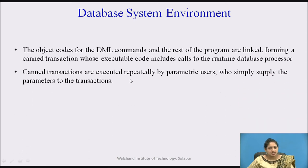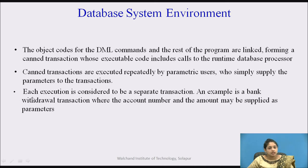Canned transactions are executed repeatedly by parametric users who simply supply the parameters. For example, bank clerks perform repetitive functions like withdrawals and deposits. Each execution is considered a separate transaction. An example is a bank withdrawal transaction where the account number and amount are supplied as parameters.